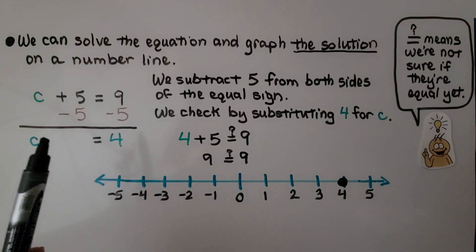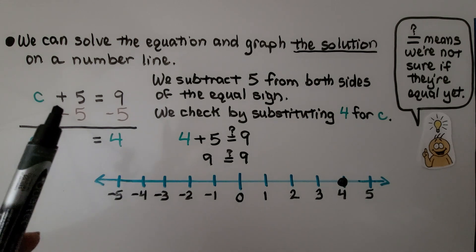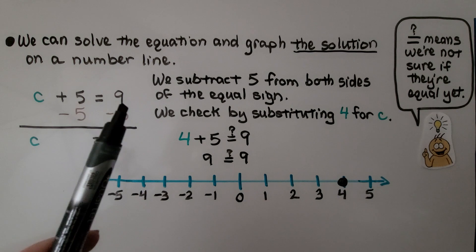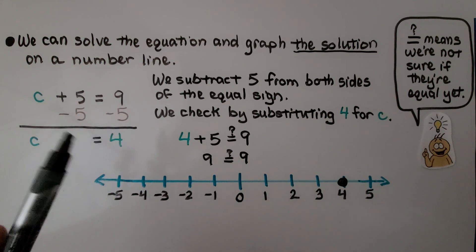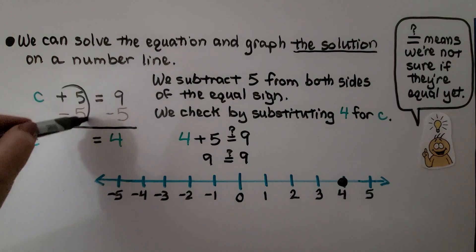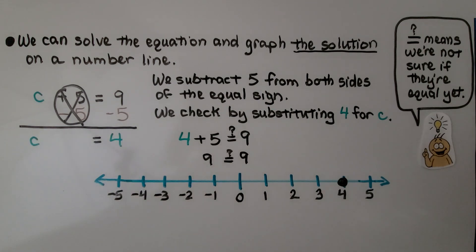We can solve the equation and graph the solution on a number line. We have c plus 5 is equal to 9. We subtract 5 from both sides of the equal sign. That's going to eliminate it, create a zero pair. We take 5 away from the 9 and get 4. We see c is equal to 4. We can check by substituting 4 for c.